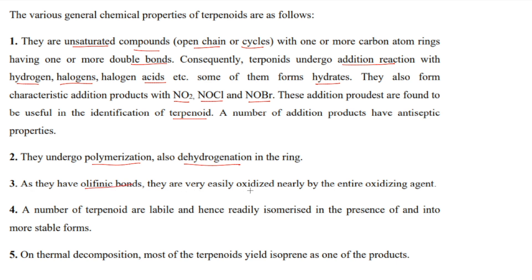The second chemical property is that terpenoids undergo polymerization, also called dehydrogenation of the ring. They also have olefinic bonds, so they are very easily oxidized by nearly any oxidizing agent. Third, a number of terpenoids are labile and hence readily isomerize in the presence of acids into more stable forms. On thermal decomposition, most terpenoids yield isoprene as one of the products.